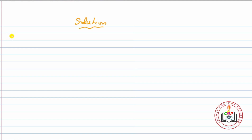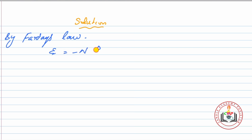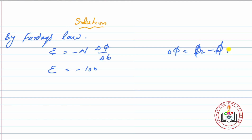Solution: Faraday's Law کو use کریں گے۔ Faraday's Law کی مدد سے induced EMF کا formula ہے: EMF = −N × ΔΦ / Δt۔ Number of turns N = 100۔ ΔΦ = Φ2 − Φ1، یعنی final میں سے initial flux۔